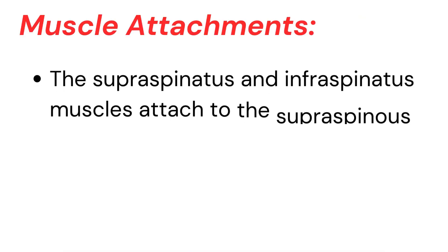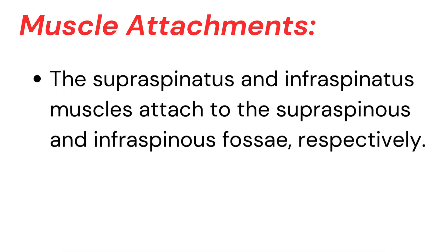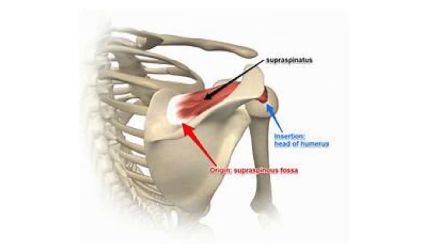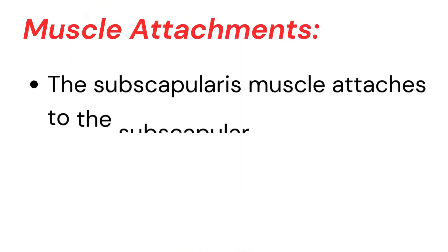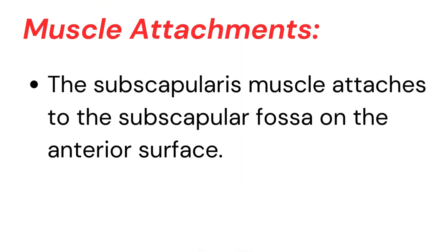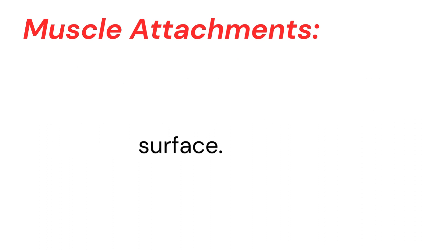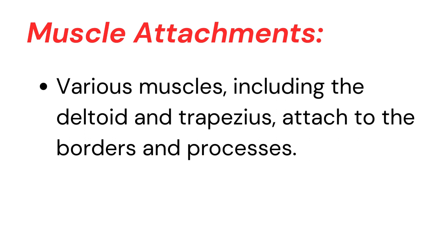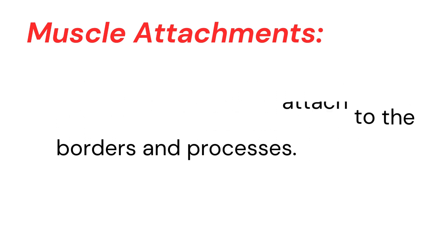Muscle attachments. The supraspinatus and infraspinatus muscles attach to the supraspinous and infraspinous fossae, respectively. The subscapularis muscle attaches to the subscapular fossa on the anterior surface. Various muscles, including the deltoid and trapezius, attach to the borders and processes.